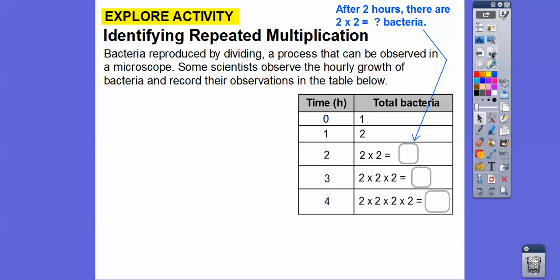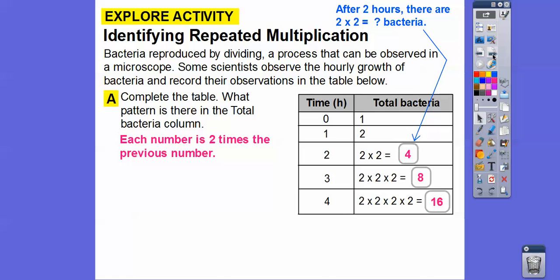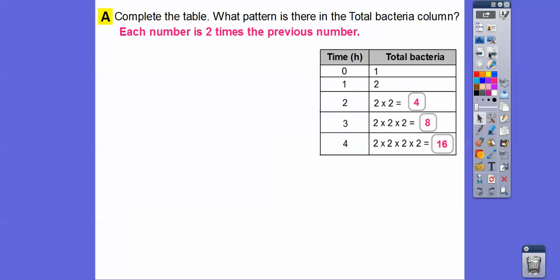After two hours, there's two times two bacteria. Let's complete the table. Two times two is four. Then four times two is eight bacteria, and eight times two is 16. The pattern is that each number is two times the previous number — it keeps doubling. One times two is two, two times two is four, four times two is eight, eight times two is 16.